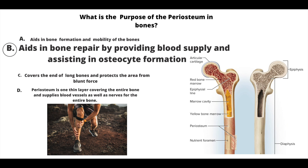The inner layer of the periosteum is called the cambium and this contains osteoblasts. Osteoblasts synthesize and mineralize the bone — they create the hard part of our bone. They are most active and we have the most osteoblasts during adolescence and childhood. This is when we are at our peak of bone formation.